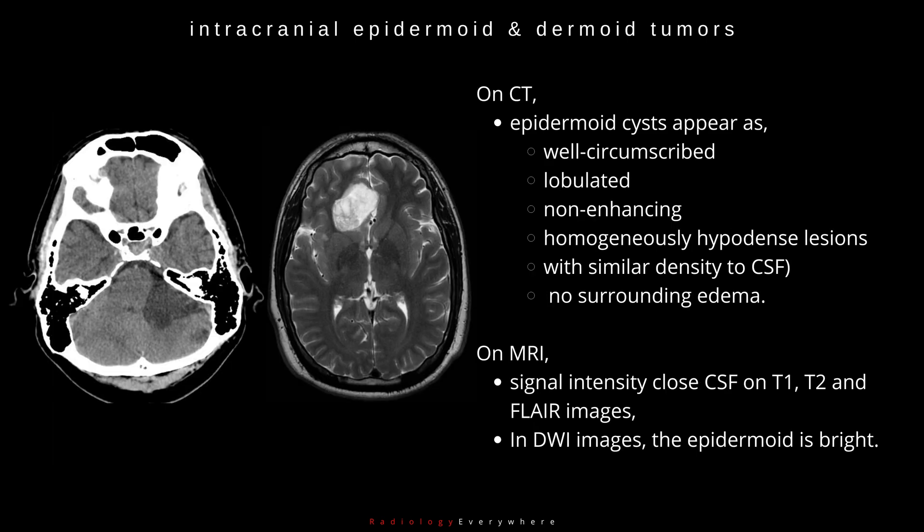On CT, epidermoid cysts appear as well-circumscribed, lobulated, non-enhancing, homogeneously hypodense lesions with similar density to CSF. There is no surrounding edema.